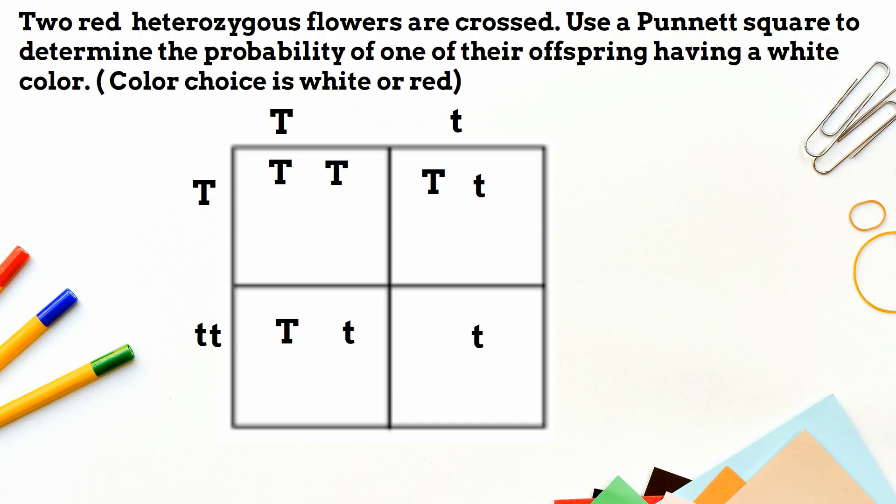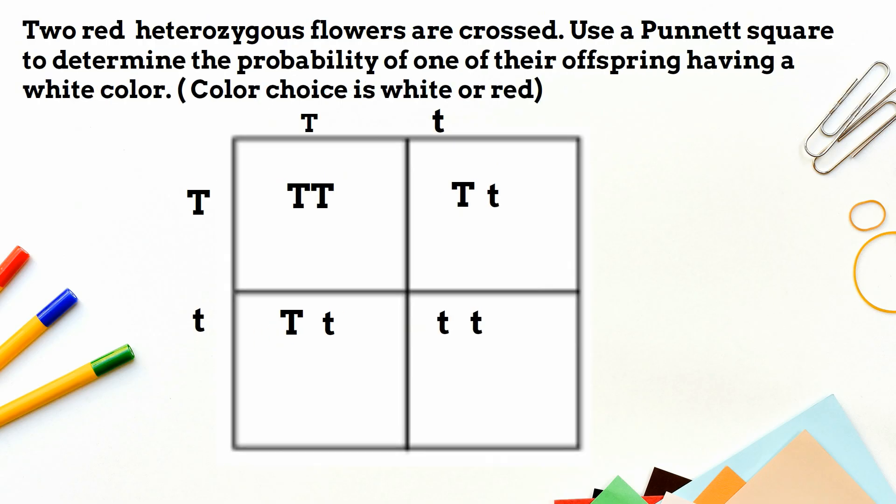Now, let's see what color the flowers will be. Any time you see a capital letter, this trait will appear, and you will have a dominant trait. And the only time you receive recessive traits is when you have two lowercase letters.